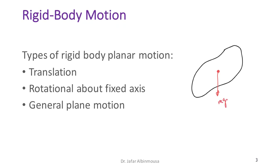When we say this is a rigid body, we mean that if there are two points — point A and point B — no matter what we do to the body, whether we rotate it, translate it, or rotate and translate it at the same time, these two points will remain at the same distance from each other. This is because the body is assumed to be rigid. If the body is not rigid, applying forces will cause it to deform, and the distance between the two points will not remain the same, nor will the orientation.